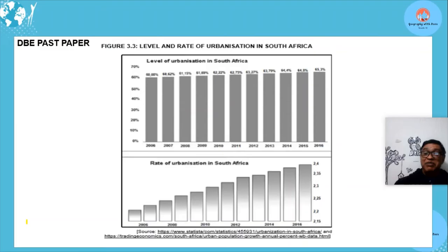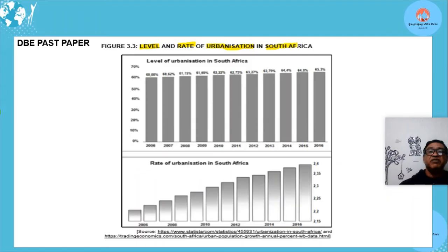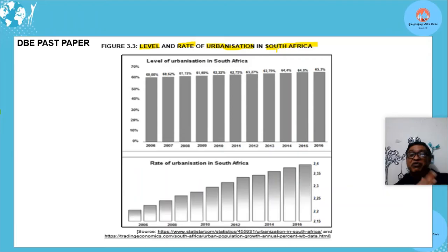Now let's look at a past DBE paper. It's always important to do past papers at the end of each section. The question focuses on level and rate of urbanization specific to South Africa. The figure directs us to these two concepts: level — how urbanized an area is — and rate — how fast urbanization is occurring.